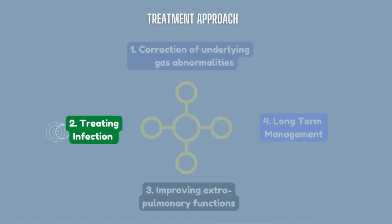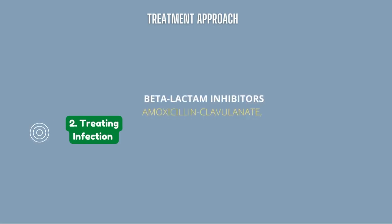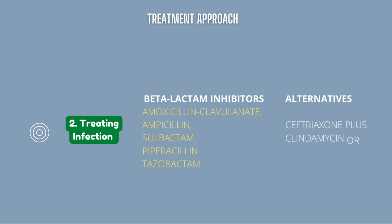Treating infection: antibiotics to be used include beta-lactam inhibitors such as amoxicillin-clavulanate, ampicillin-sulbactam, and piperacillin-tazobactam. Alternatives include ceftriaxone plus clindamycin or metronidazole, and a respiratory fluoroquinolone.